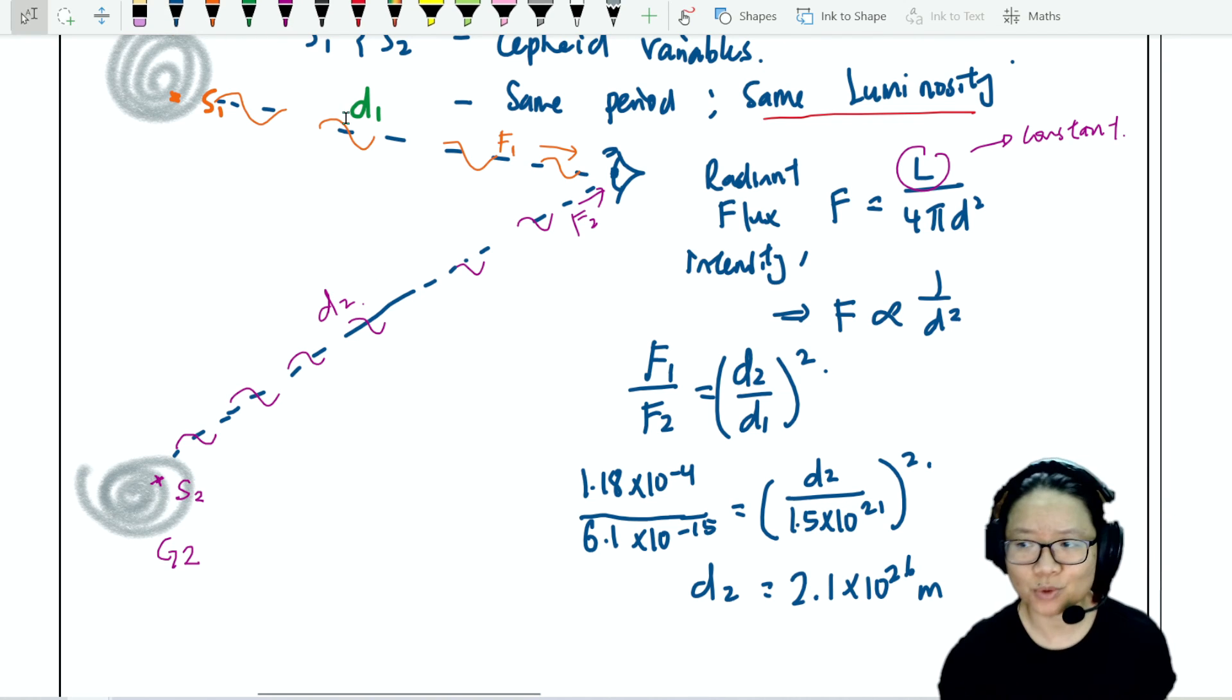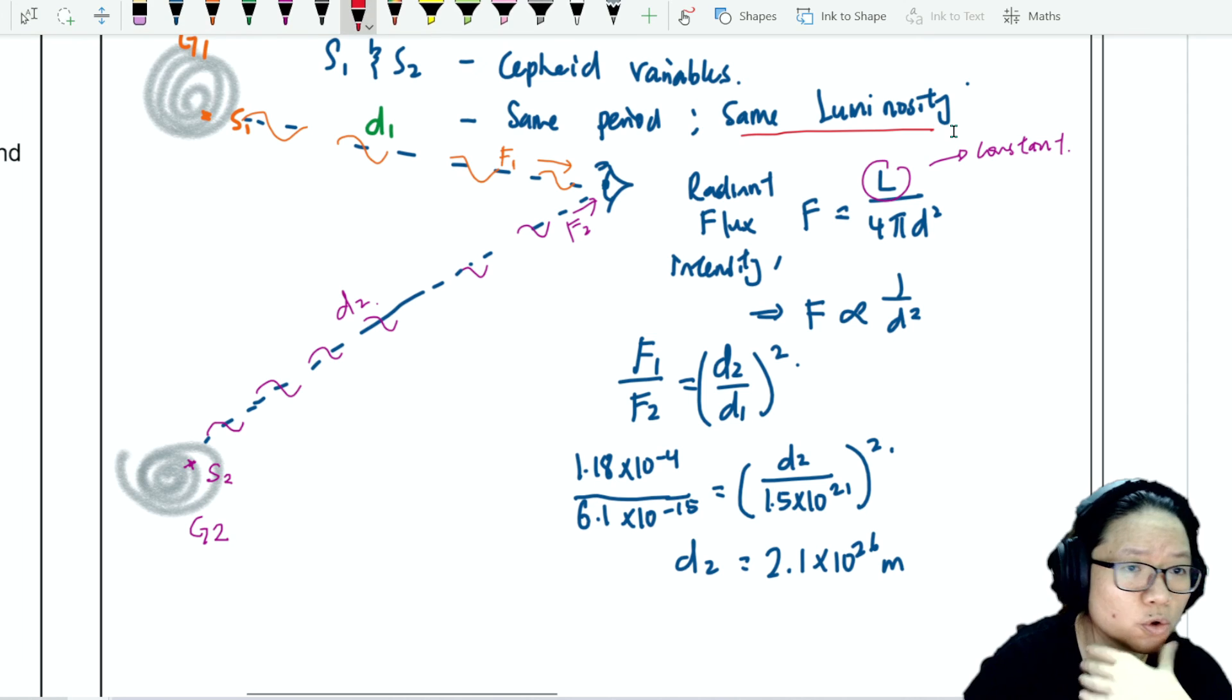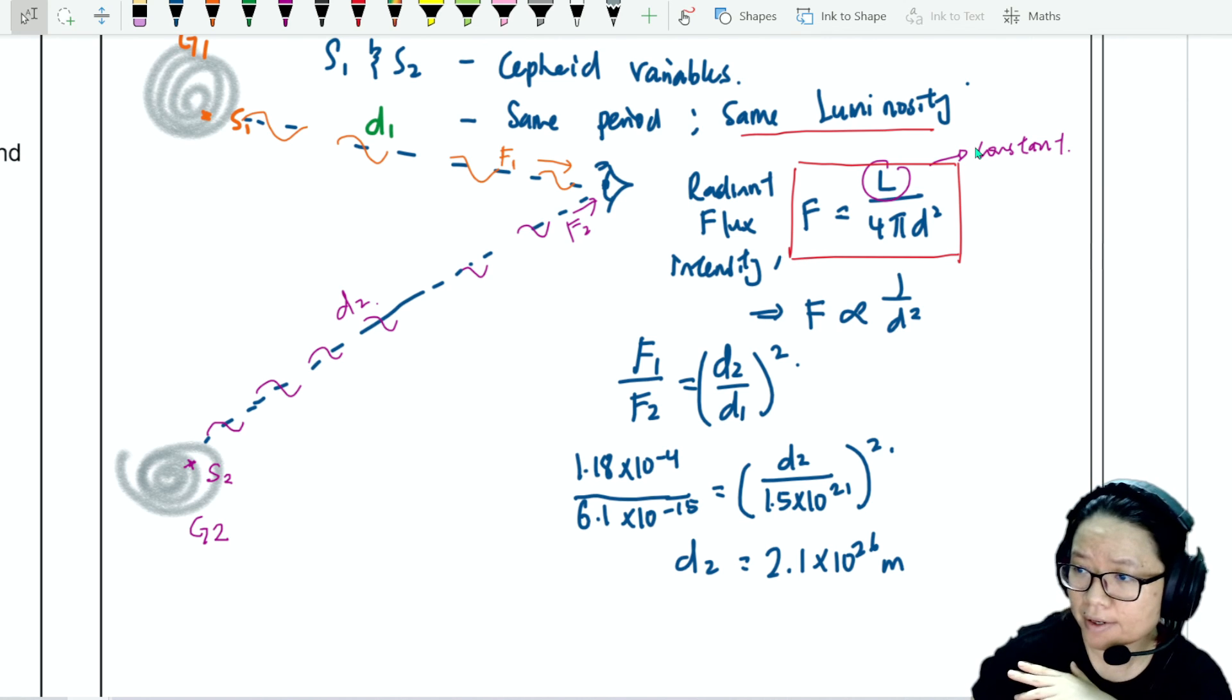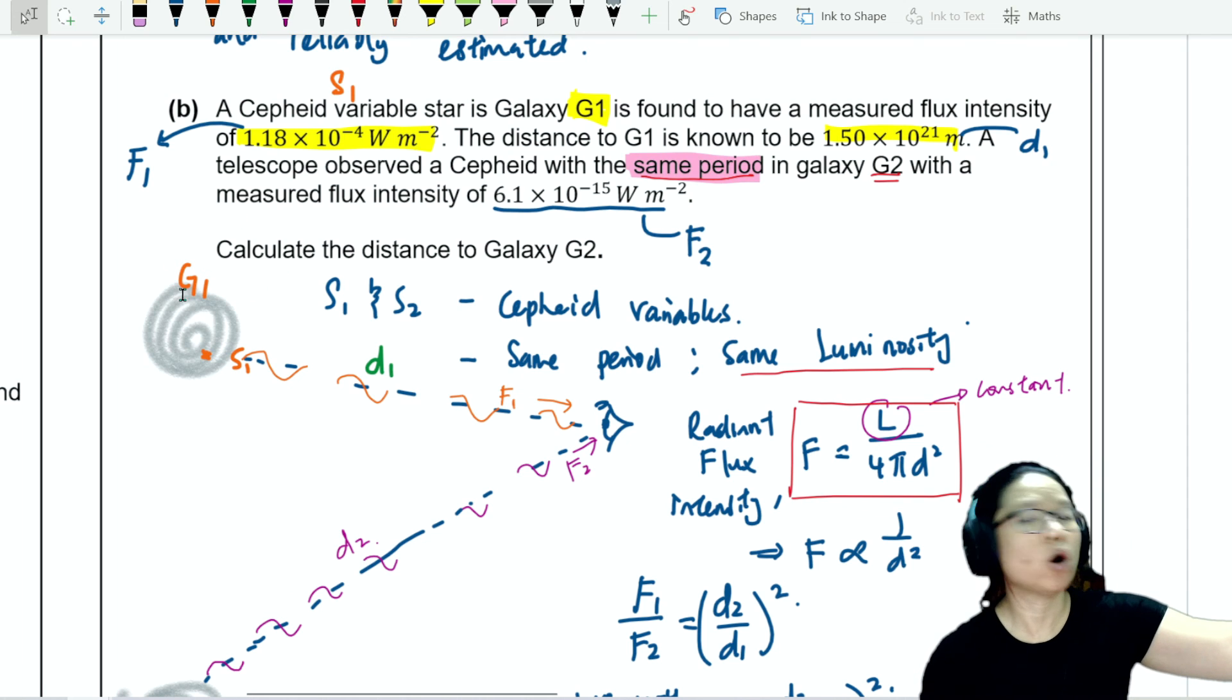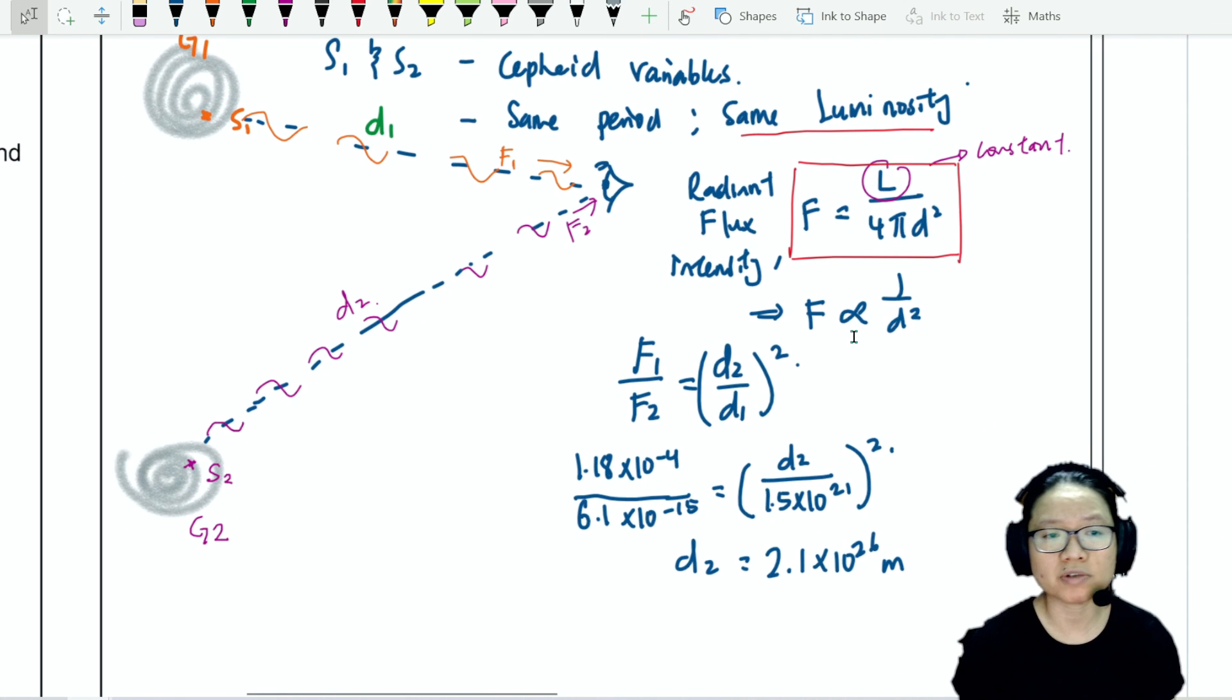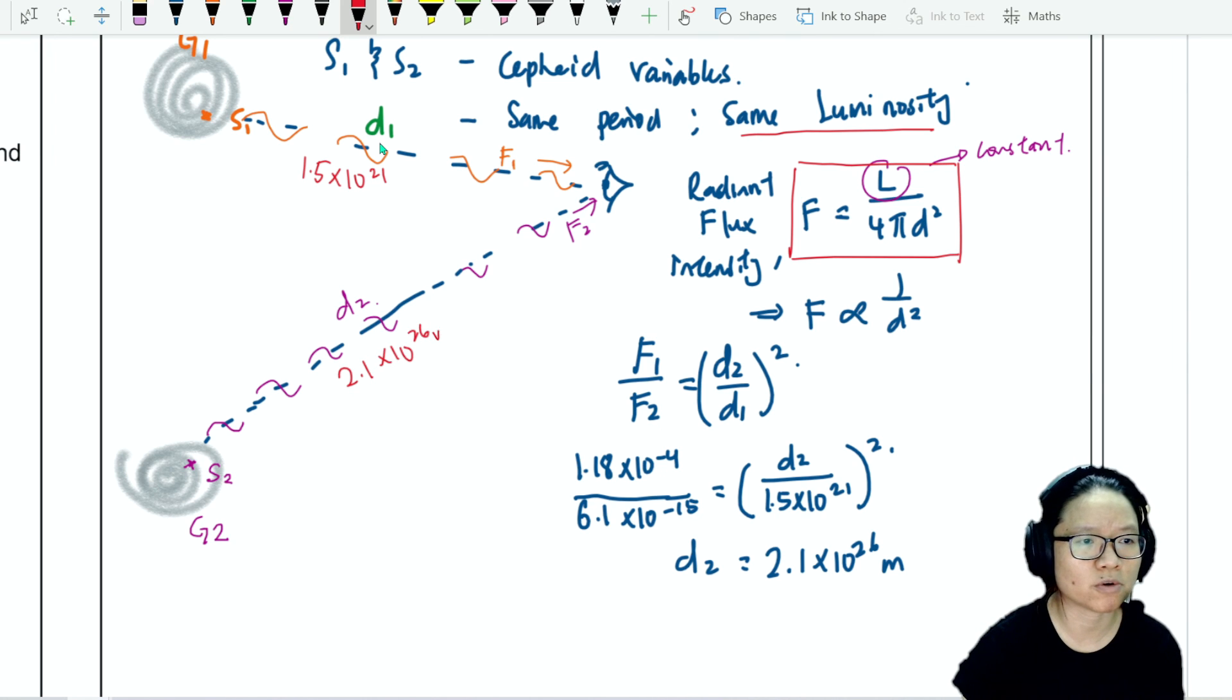So Galaxy 2 is really, really far away. And that's it. So basically, we're still using the good old radiant flux intensity equation, luminosity per unit area or L over 4 pi D squared. We identified that the luminosity for both stars are the same because they are Cepheid variables, and they have the same period. So I look at this galaxy. Oh, it is the same. There's a star that has the same period as another star in another galaxy. Hence, I can use the fact that they have the same luminosity and just use simple ratio if I already know the separation or the distance for one star. Like this distance is 1.5 times 10 to the power of 21. And by calculation, this distance will now be 2.1 times 10 to the power of 26 meters.